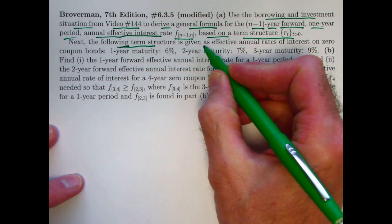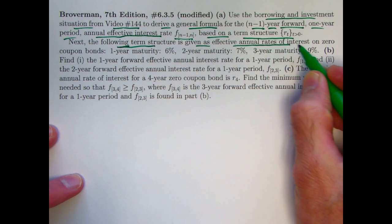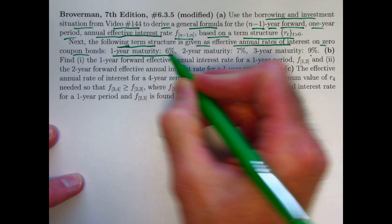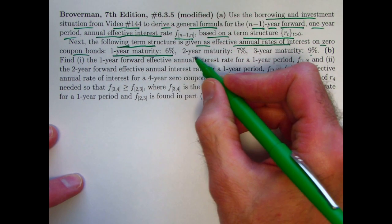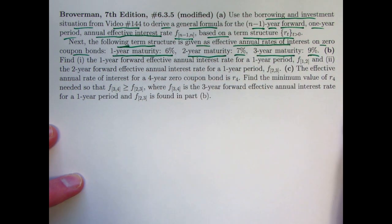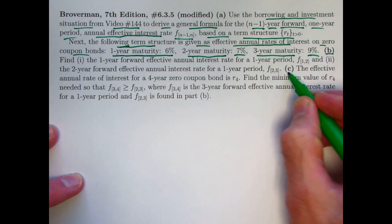The following term structure is given as effective annual rates of interest on zero-coupon bonds. Those that have one-year maturity have a 6% return as an annual rate, effective annual rate. Two-year maturity is 7%, three-year maturity is 9%. Based on that, do parts B and C.